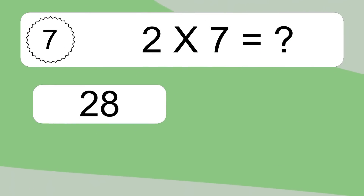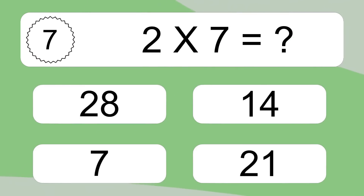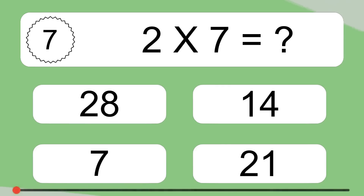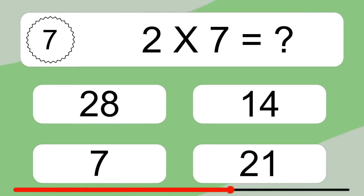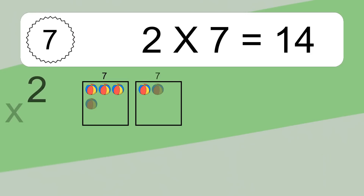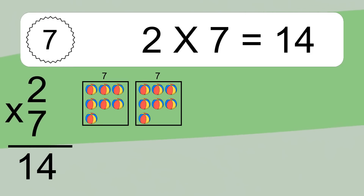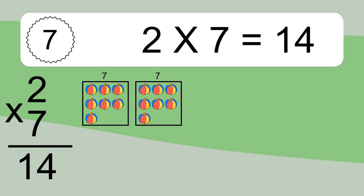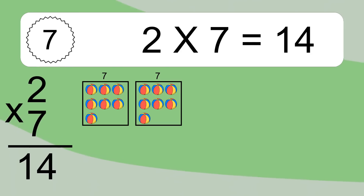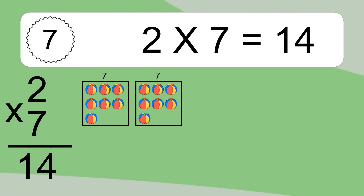2 times 7 equals what? 2 times 7 equals 14. We have 2 boxes and each box has 7 colorful balls inside. If you count all the balls in all the boxes together, you will have 2 times 7 balls. This equals 14 balls.